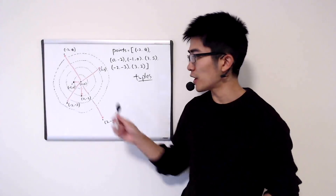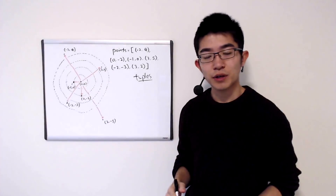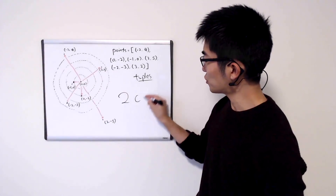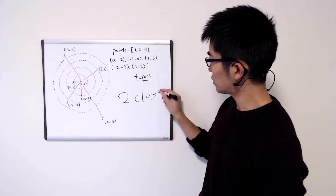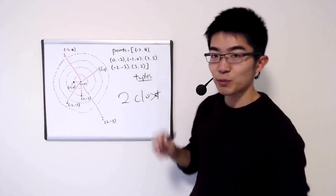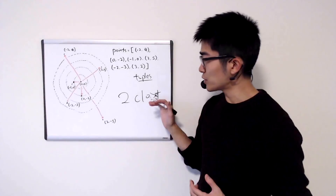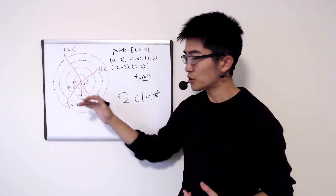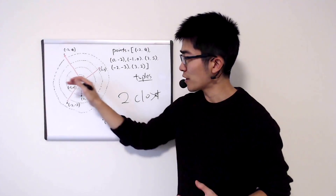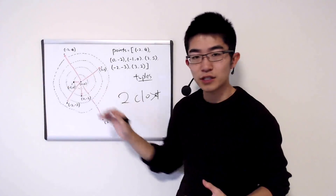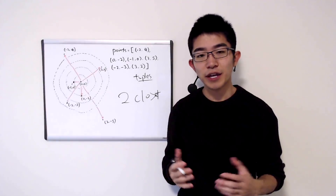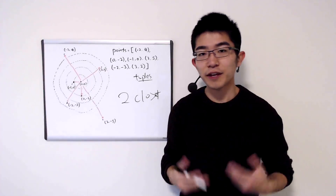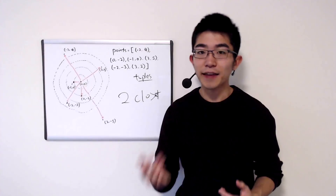The origin is at zero, zero. So for example, if the given k is two, how would you find the two closest points to the origin out of these points? The two closest points here are minus one, zero and zero, minus two. You should be able to print these points. Try solving this problem in a more general way — pause the video right here, think about how you would solve the problem, and then come back.